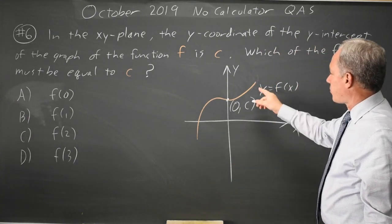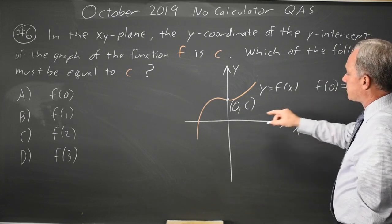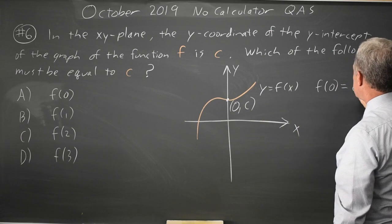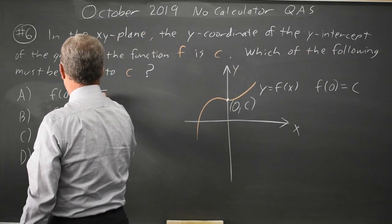And the graph y equals f of x means f of your x value, in this case 0, equals your y value, c, so the value that's equal to c is f of 0.